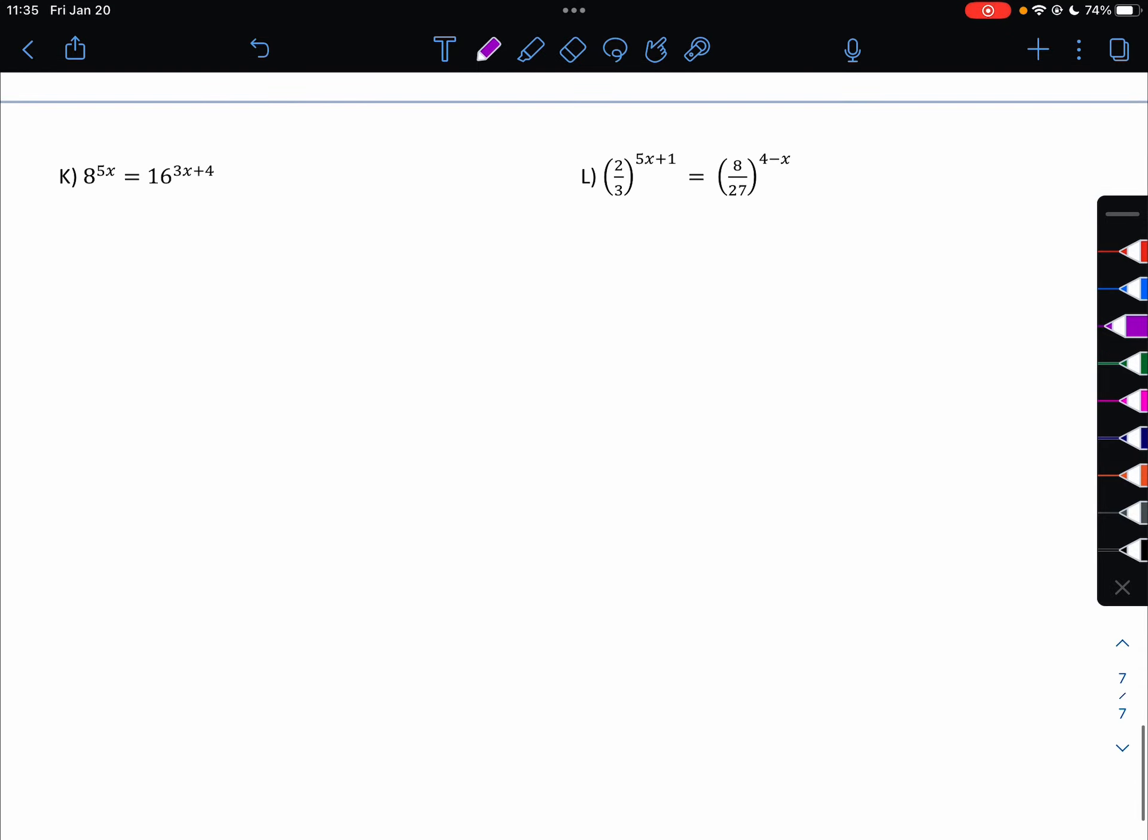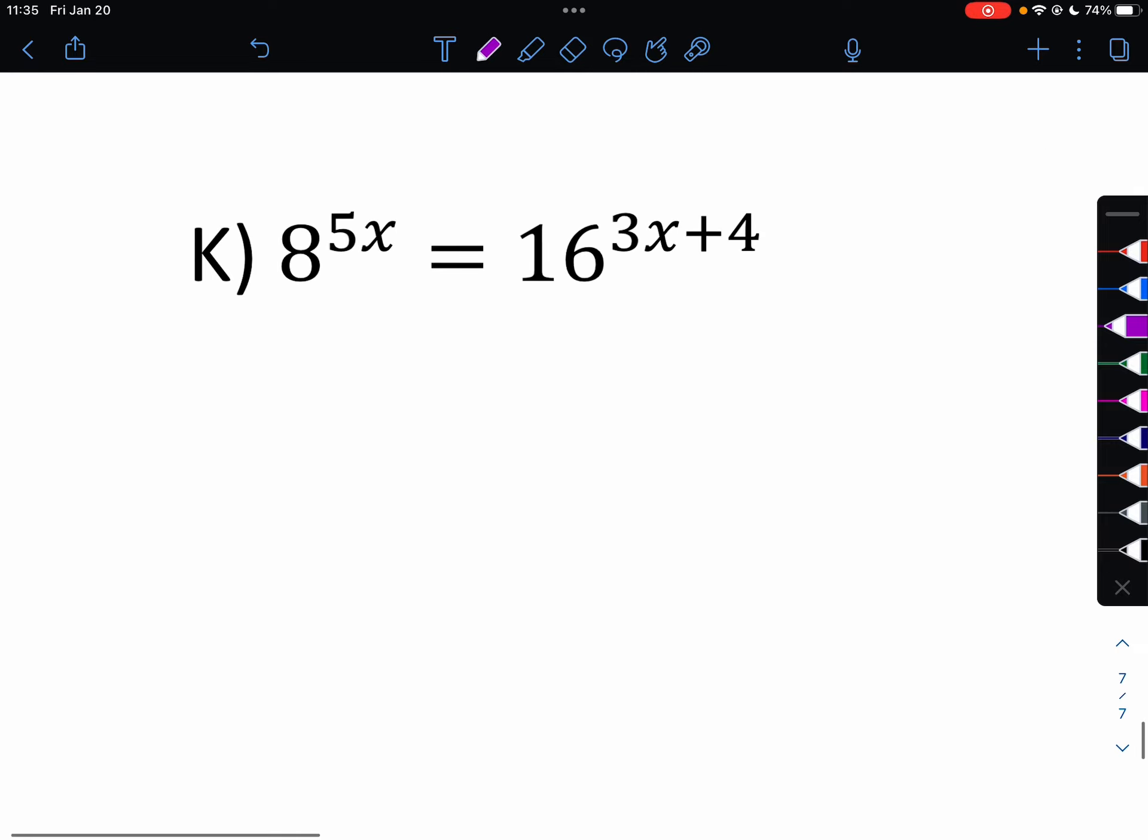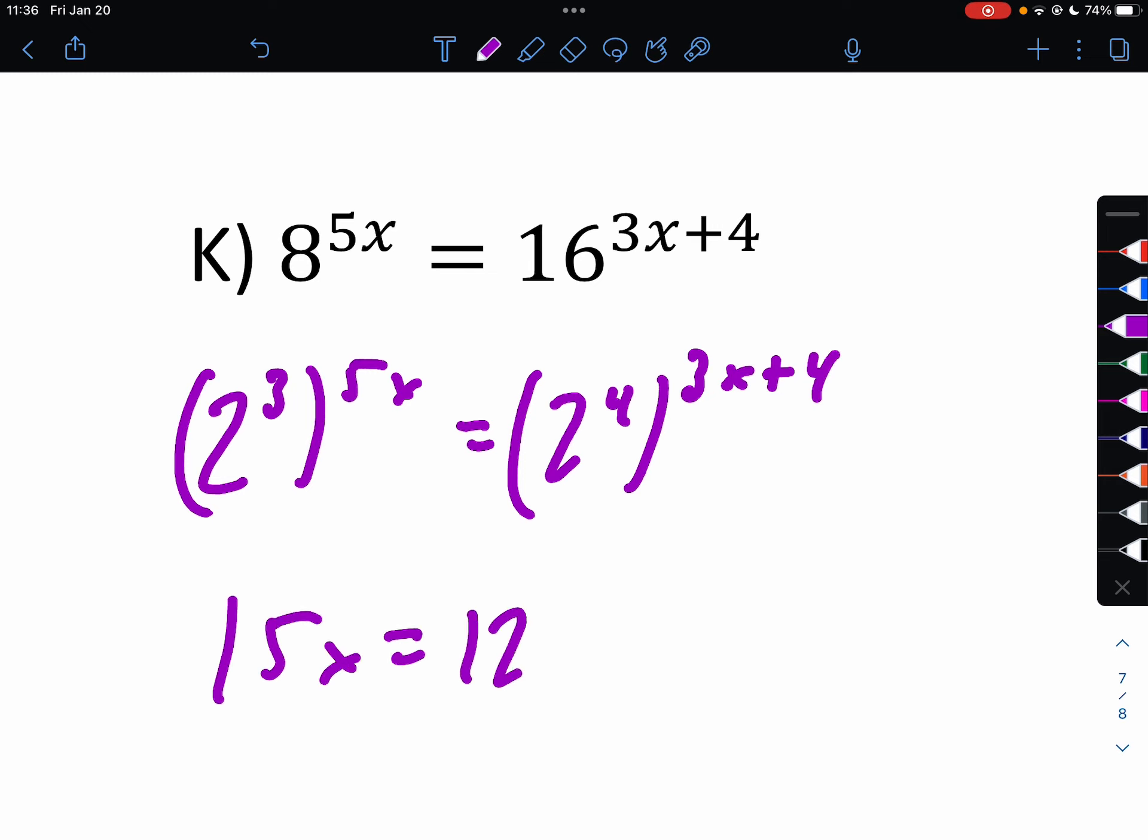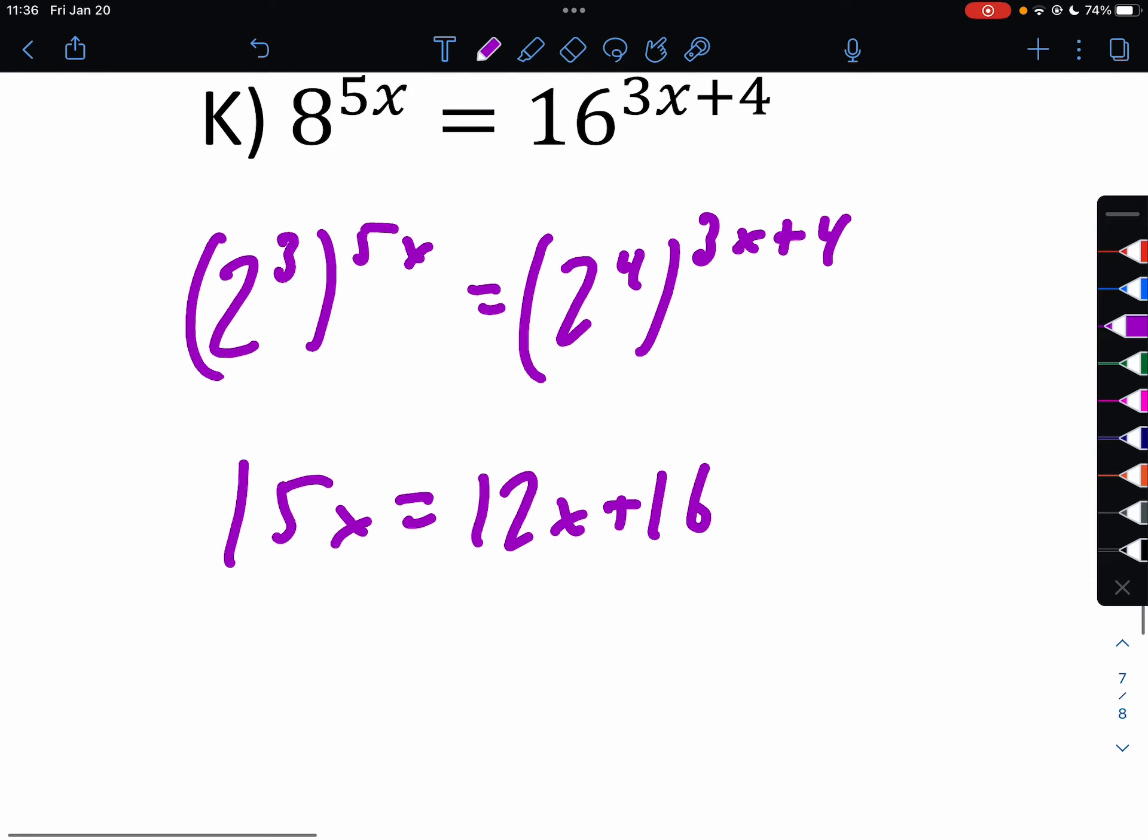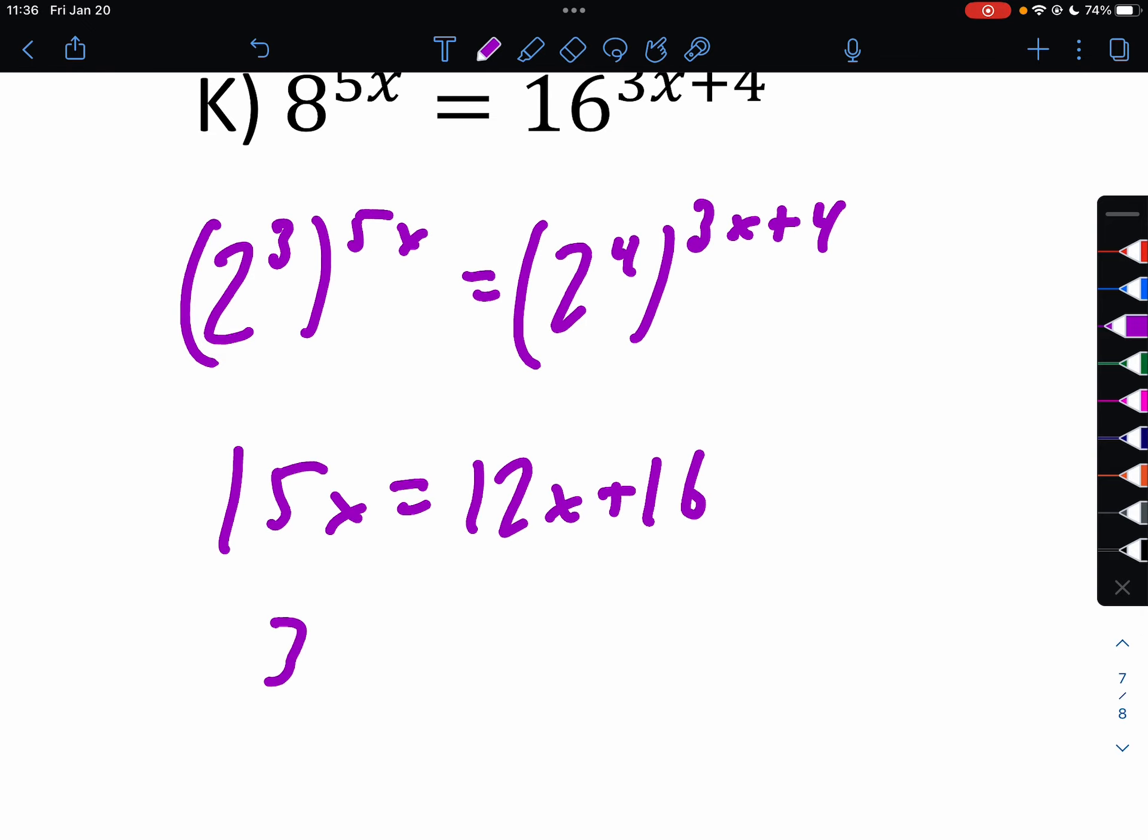And our last slide here. 8 we can write as 2 to the 3rd. 16 is 2 to the 4th. So we get 15x equals 12x plus 16. So 3x equals 16. x equals 16 thirds.